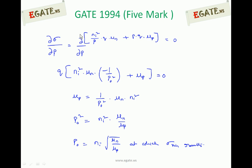Taking dσ/dp of (Ni²/p · qμn + pqμp): differentiating gives q·[−(1/p₀²)·Ni²·μn + μp] = 0. This yields μp = (1/p₀²)·Ni²·μn, so p₀² = Ni²·μn/μp, and therefore p₀ = Ni·√(μn/μp), which is the hole concentration at which minimum conductivity results.